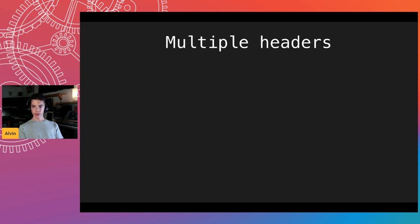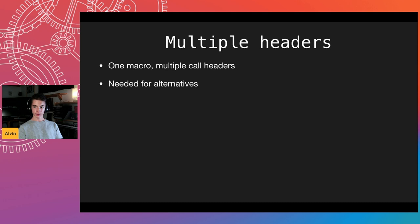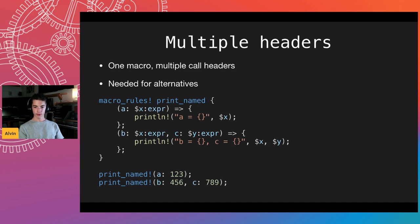You can have multiple call headers in the same macro — you need them for alternatives. Rust macros do not support alternatives on their own inside a single header. Here's an example `print_named!` with a colon and some expression: it prints using `a = value`, or using a different format for the other case.